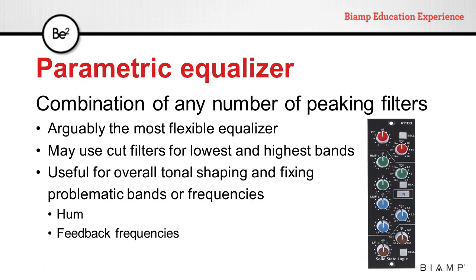Parametric equalizers are a combination of any number of peaking filters. These are arguably the most flexible equalizers in the market. A very common arrangement is two or three peaking filters and cut shelf filters for high and low frequency bands. They are useful for overall tonal shaping and fixing problematic bands or frequencies.